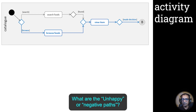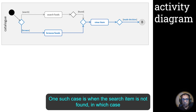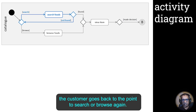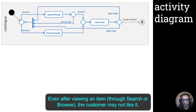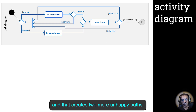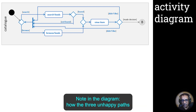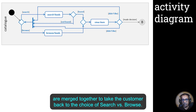What are the unhappy or negative paths? One such case is when the searched item is not found, in which case the customer goes back to the point to search or browse again. Even after viewing an item through search or browse, the customer may not like it — that creates two more unhappy paths. Note in the diagram how the three unhappy paths are merged together to take the customer back to the choice of search versus browse.